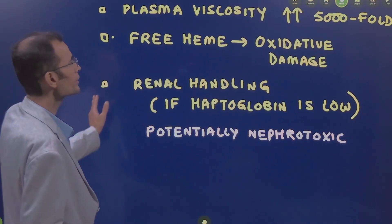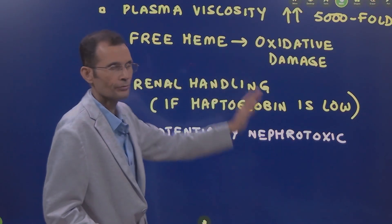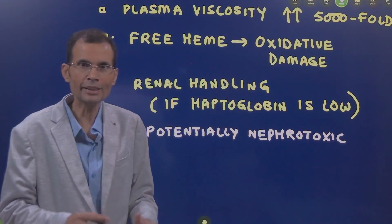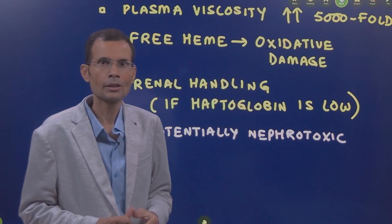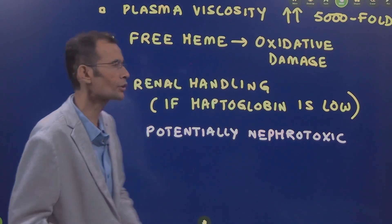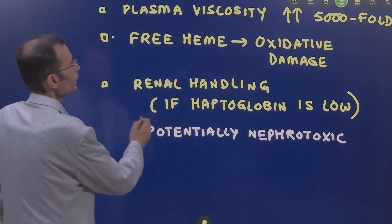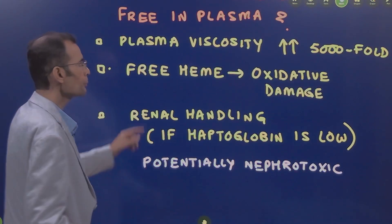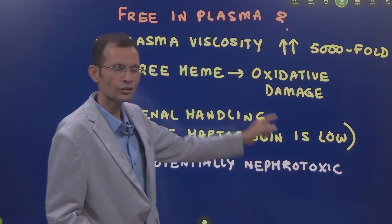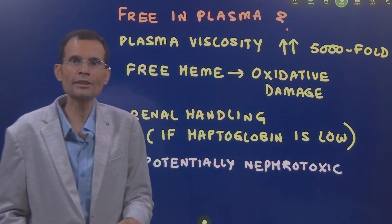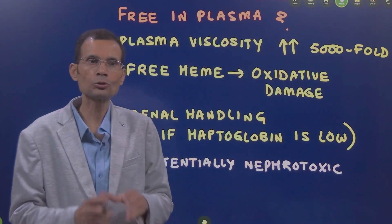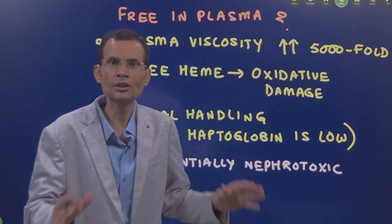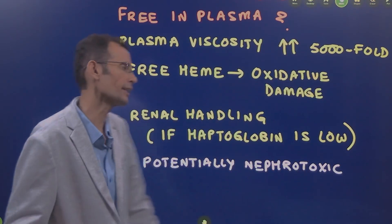The second potential hazard is that if there is free heme in the plasma — heme being the component of hemoglobin — it would potentially cause oxidative damage to various tissues and cells.